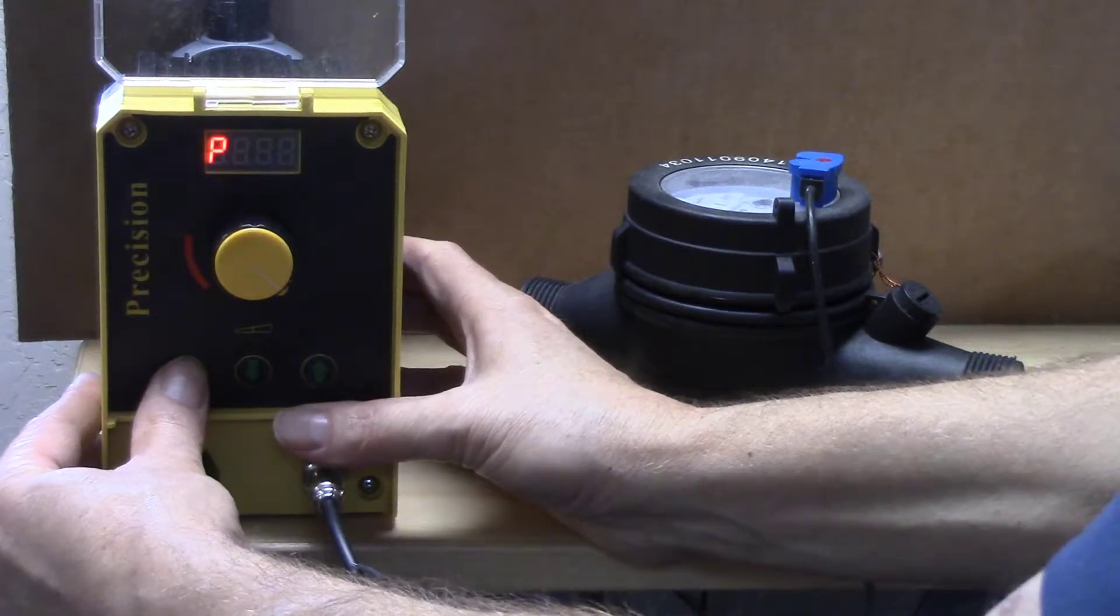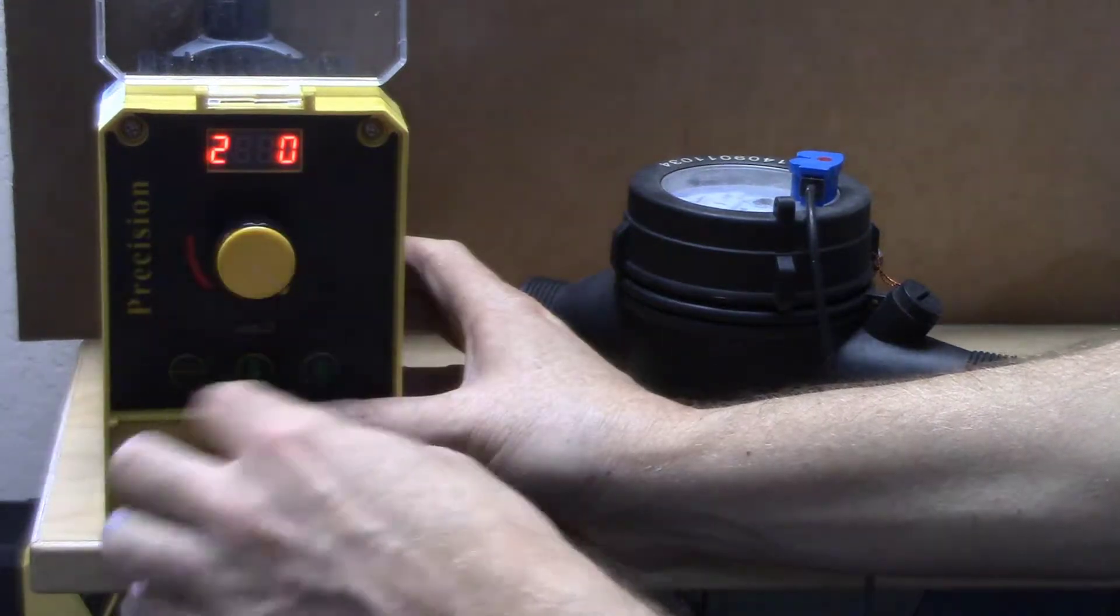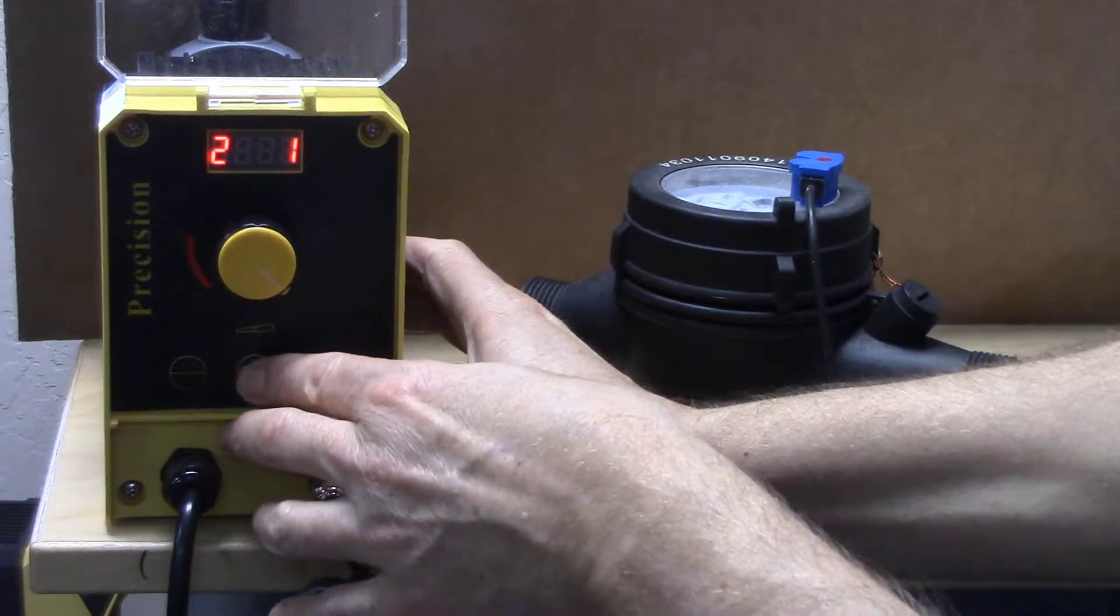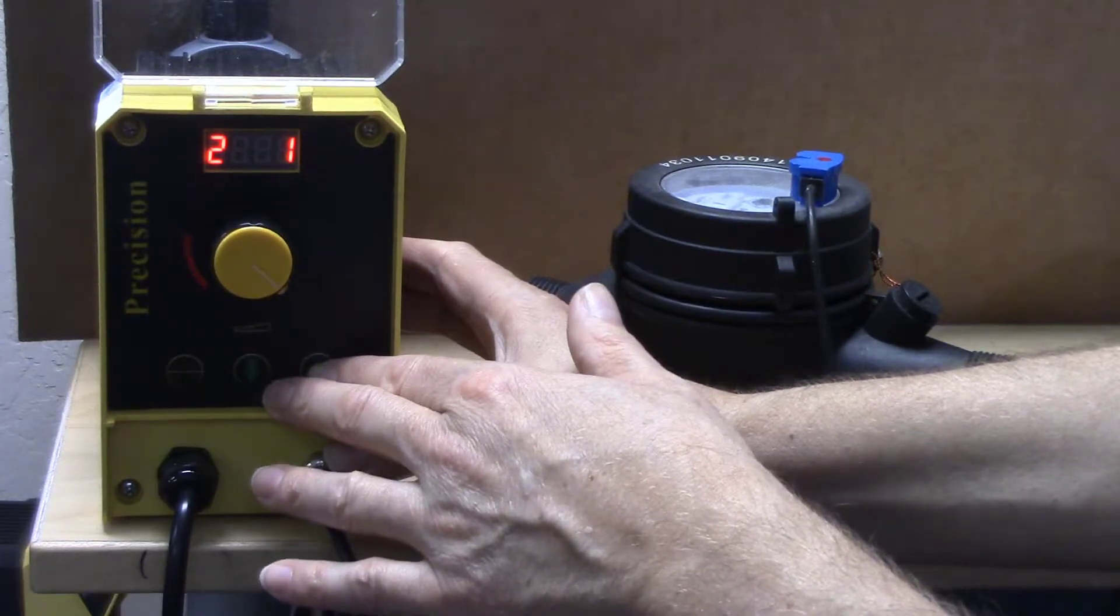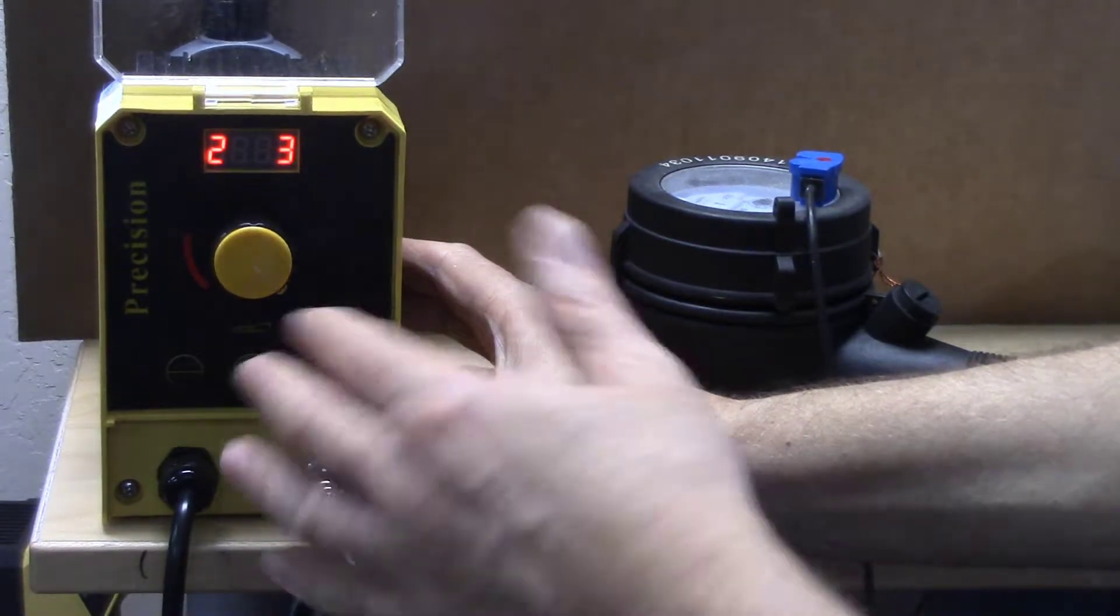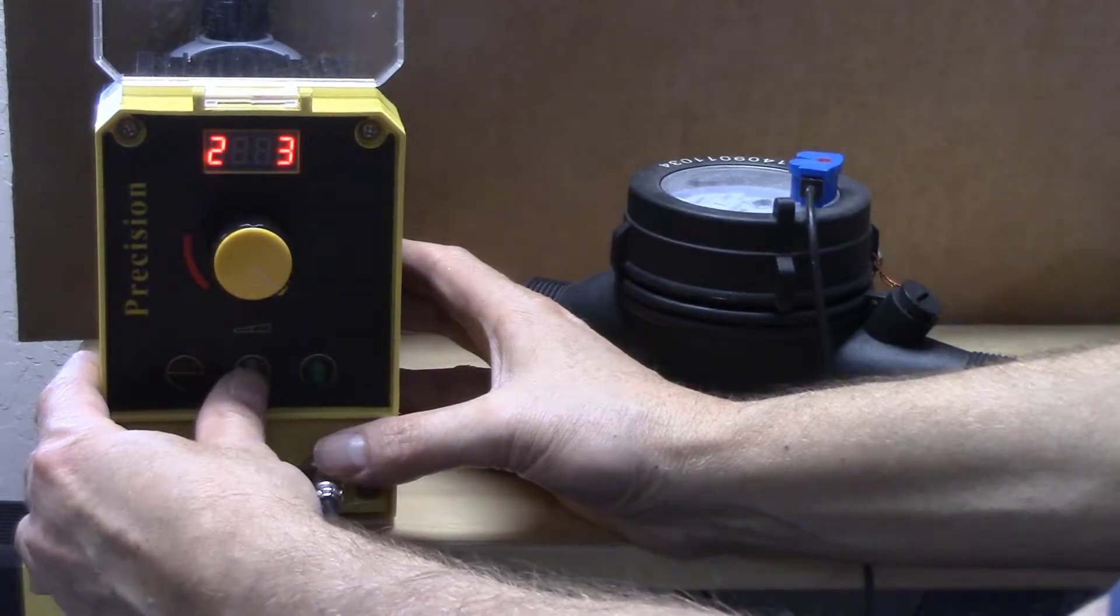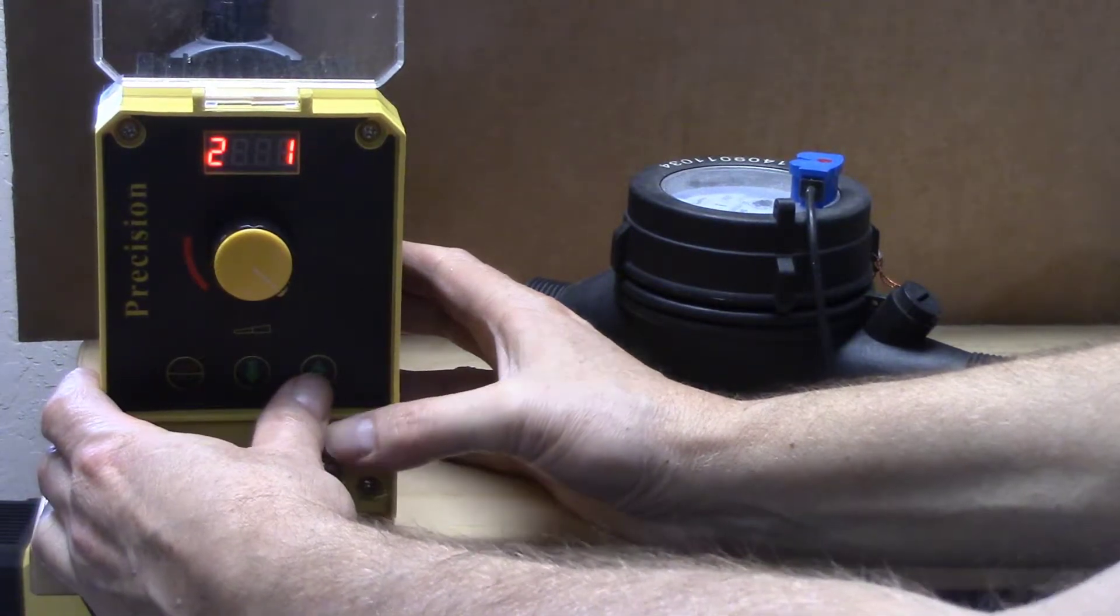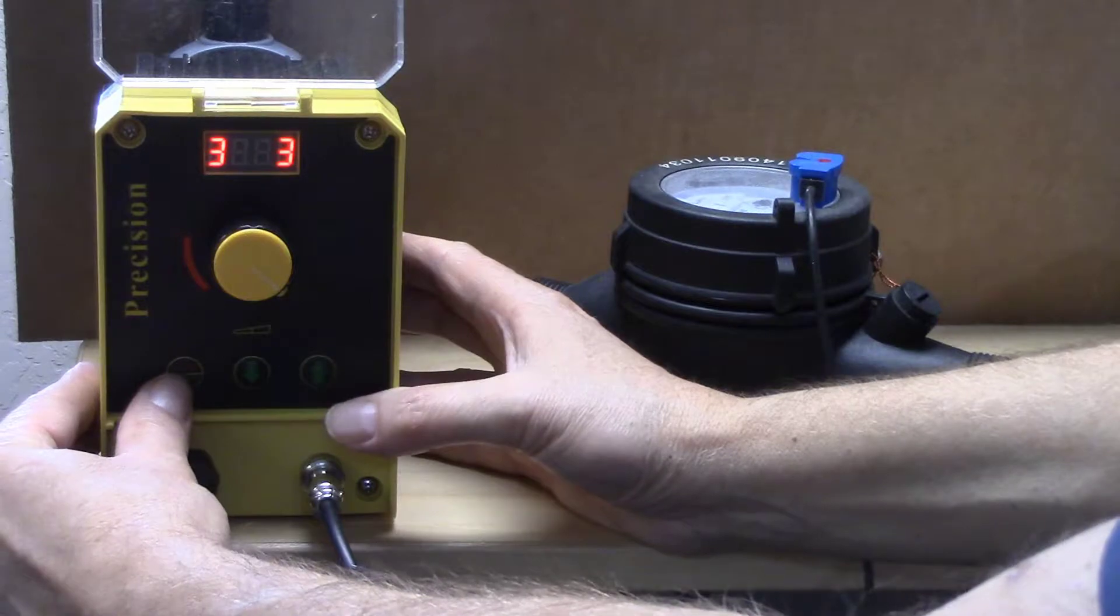Parameter two has the options zero, one, two, and three. Zero is manual mode, one is pulse multiplier, two is pulse divider, and three is a function that's very rarely used for our applications. Most of the time you'll have the pump set either on zero for manual or one for pulse multiplier.